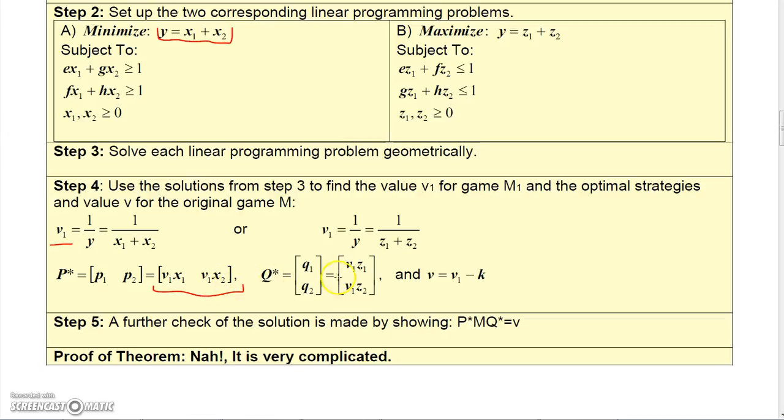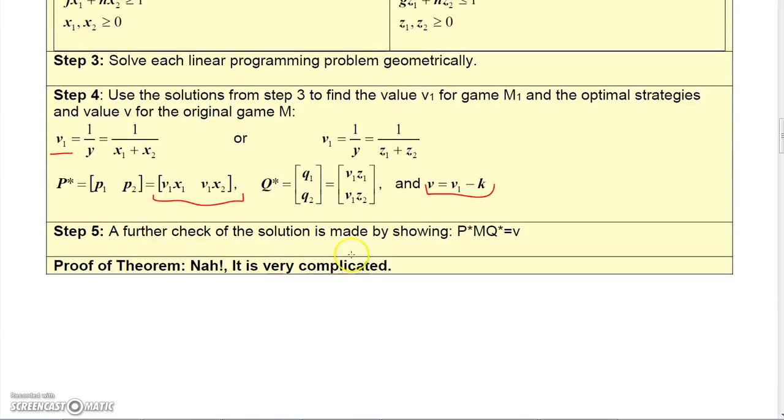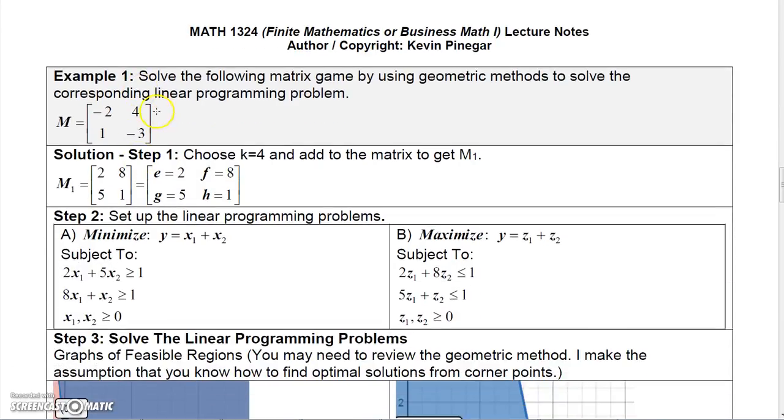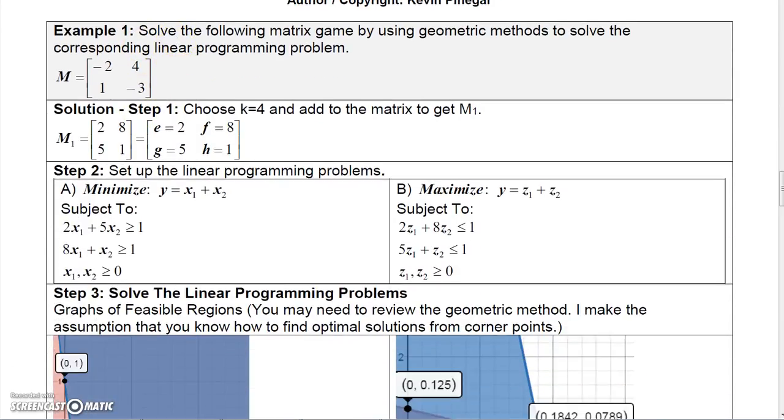P star is going to be the matrix V1 X1, V1 X2. Q star is going to be the column matrix V1 Z1, V1 Z2. And then V is going to be V1 minus K. And then you can check at the end. We're not going to prove it. Let me show you an example, because I know this is kind of complicated and drawn out.